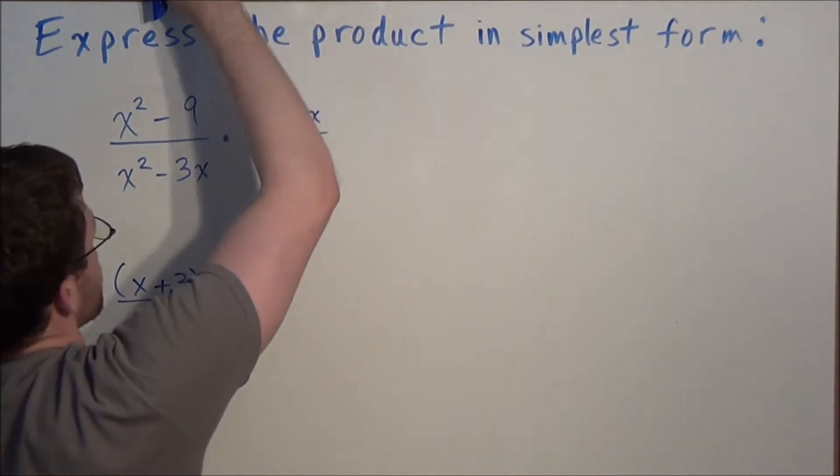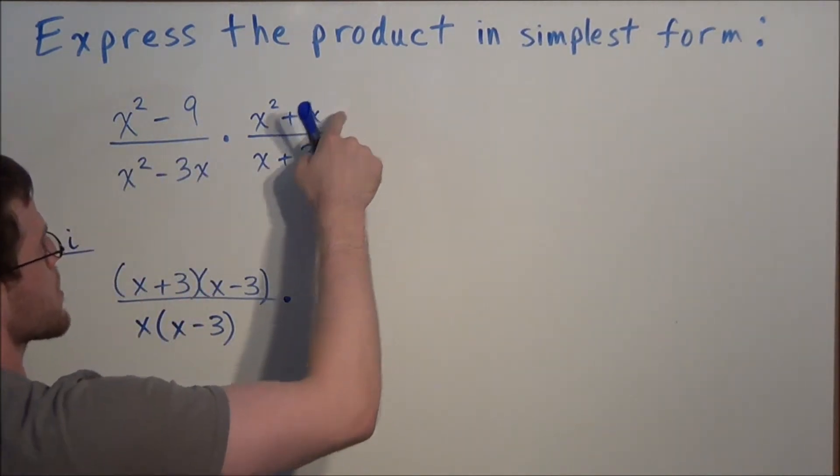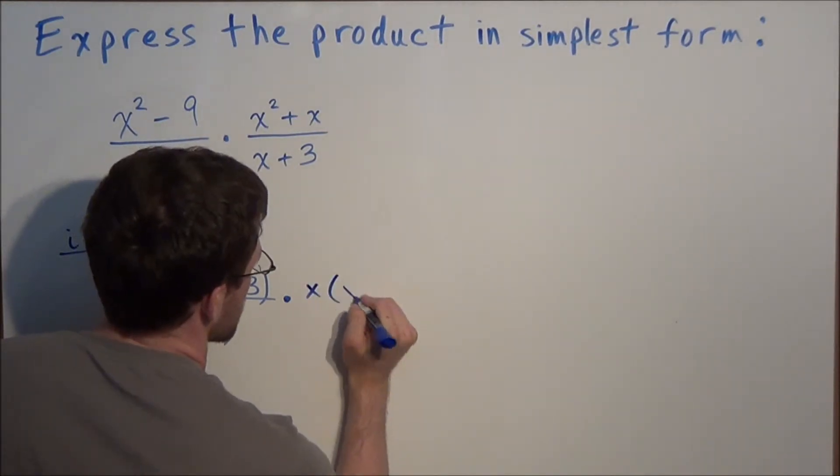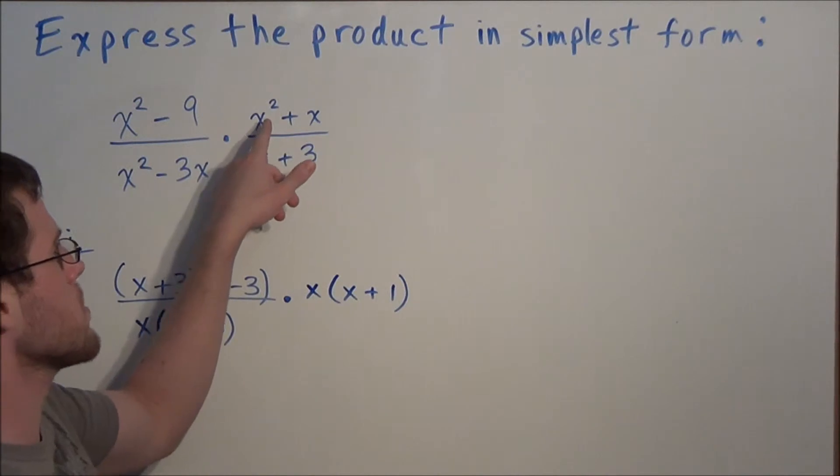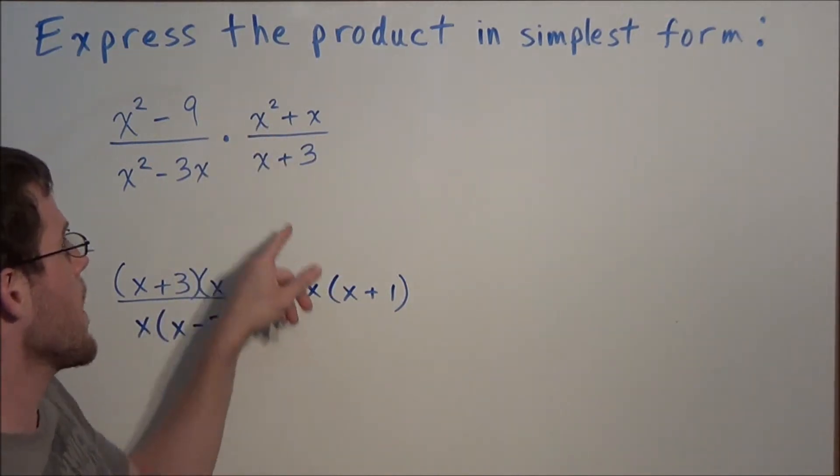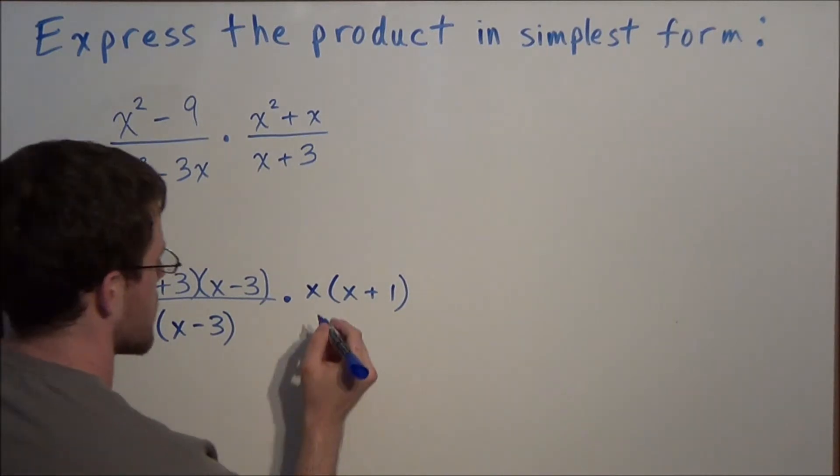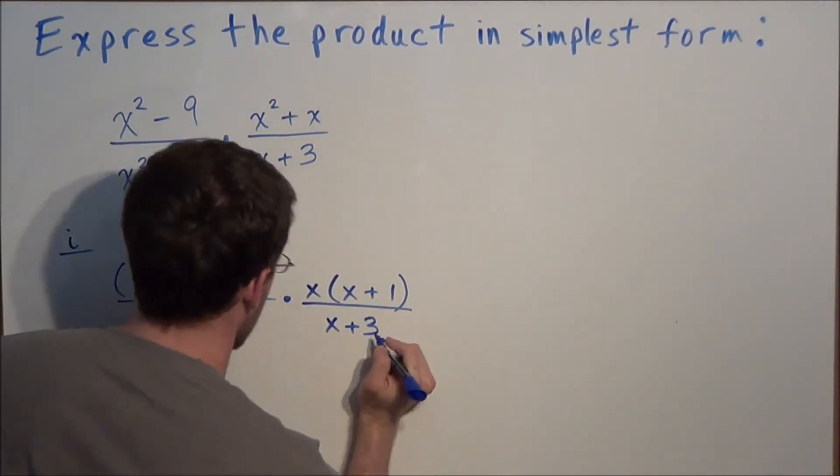Now we could target the second fraction in the problem. Using a similar technique, we could break down x squared plus x as x times x plus 1. Notice the greatest common factor between x squared and x is x, and if we divide the GCF out, all that remains is x plus 1. This is over x plus 3, which cannot be broken down any further.